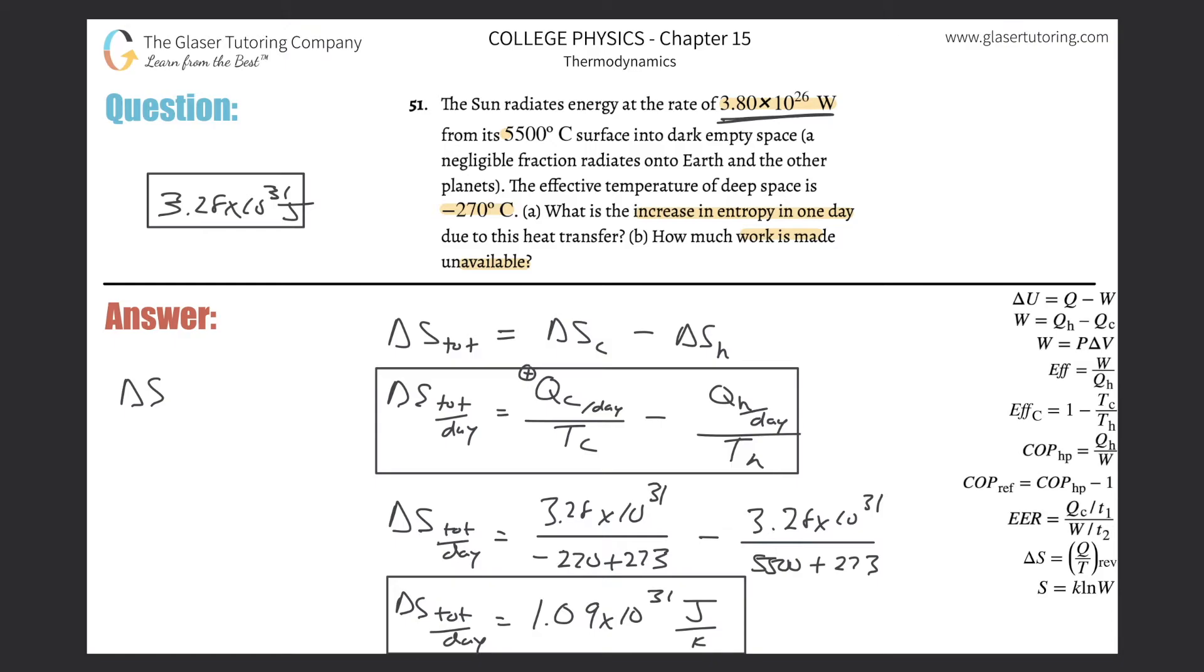So this is going to be the change in entropy of the colder environment is equal to the heat transferred into that colder environment, or I should say the heat lost to that cold environment divided by the absolute temperature of that environment.